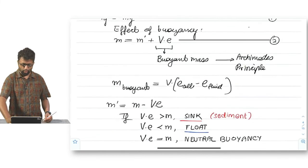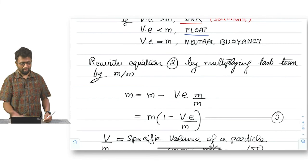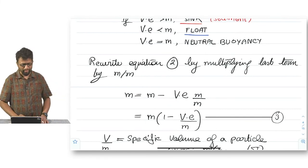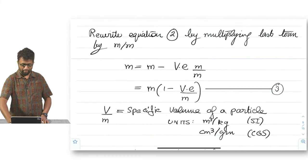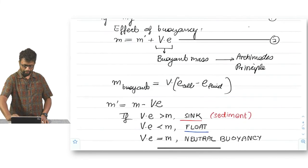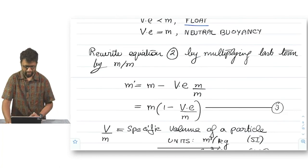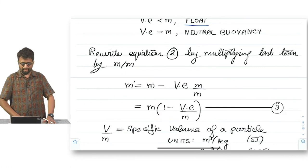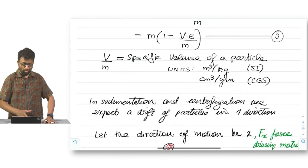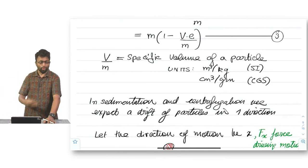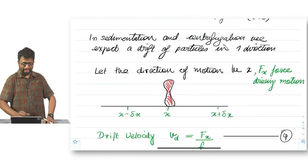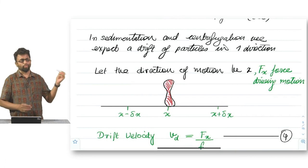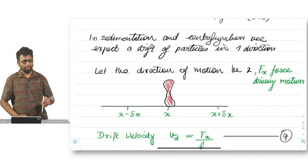Rewrite the equation number 2 by multiplying the term M by M, which is basically getting rid of M. We can take M common and we get M prime is equal to M into 1 minus V rho upon M in brackets. The specific volume of the particle is the ratio of the volume by the mass with units of meter cube per kg in SI units or centimeter cube per gram in CGS units.